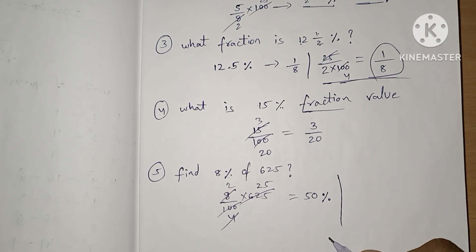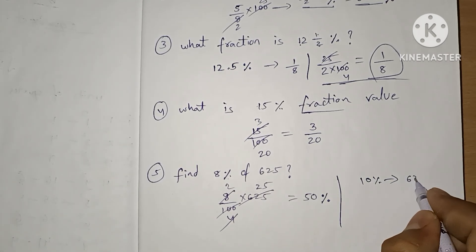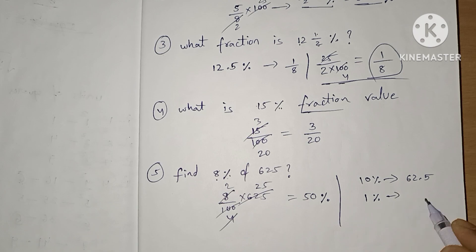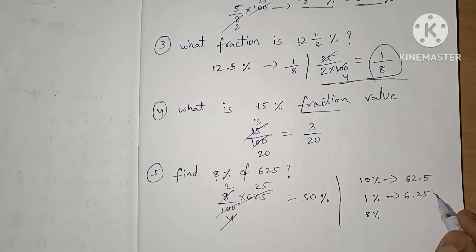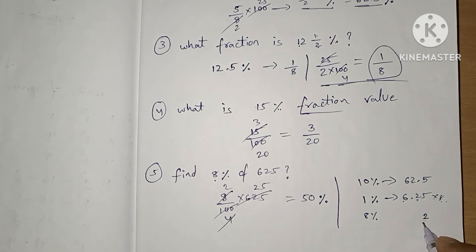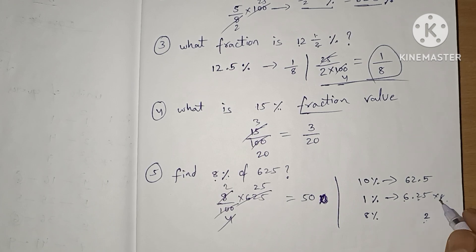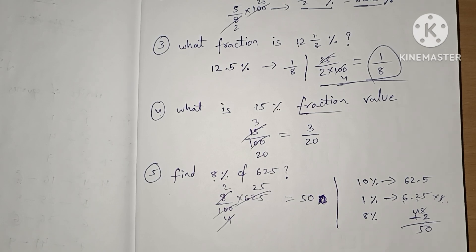For mind calculations: 10% of 625 is 62.5. But we need 8%, so we find 1% value which is 6.25. Then 8% is 6.25 into 8. 8 times 0.25 gives 2, and 8 times 6 is 48. So 48 plus 2 equals 50. The answer is 50 — not a percentage, just the value.